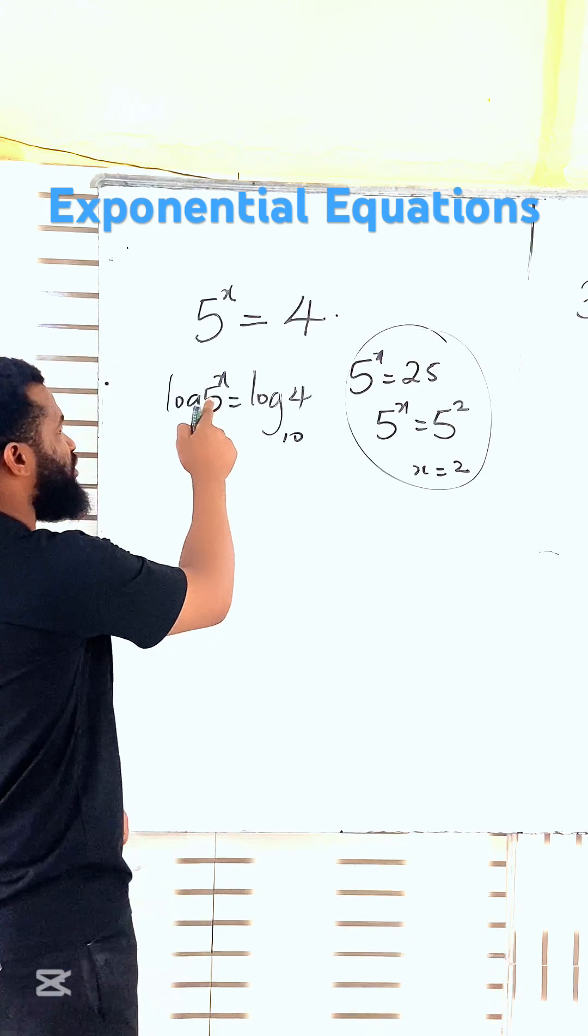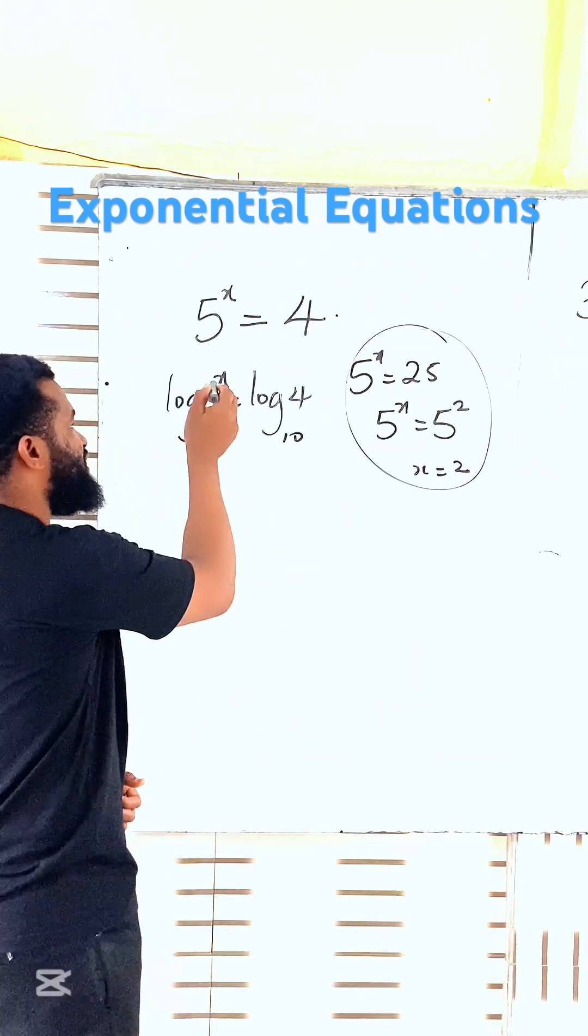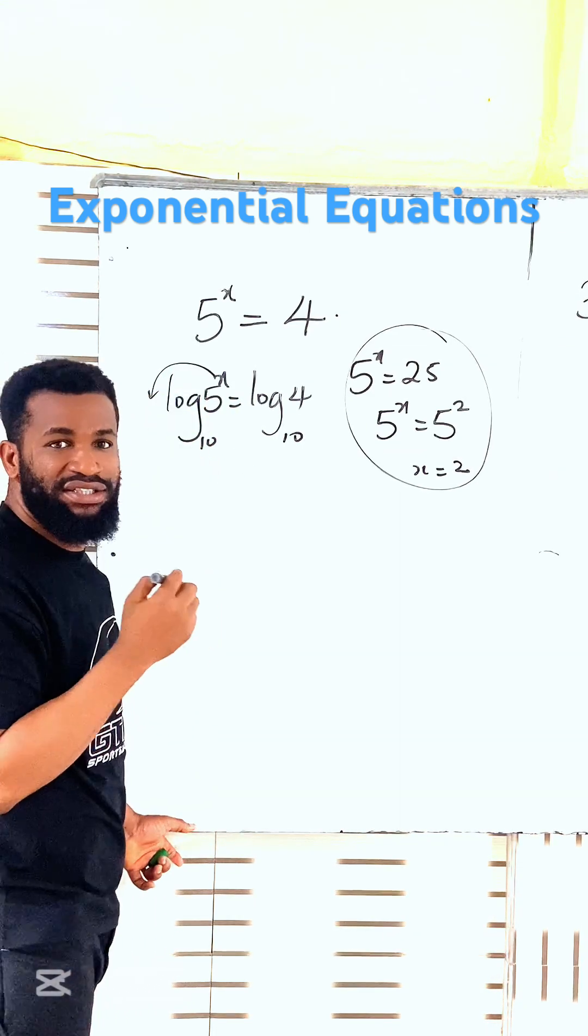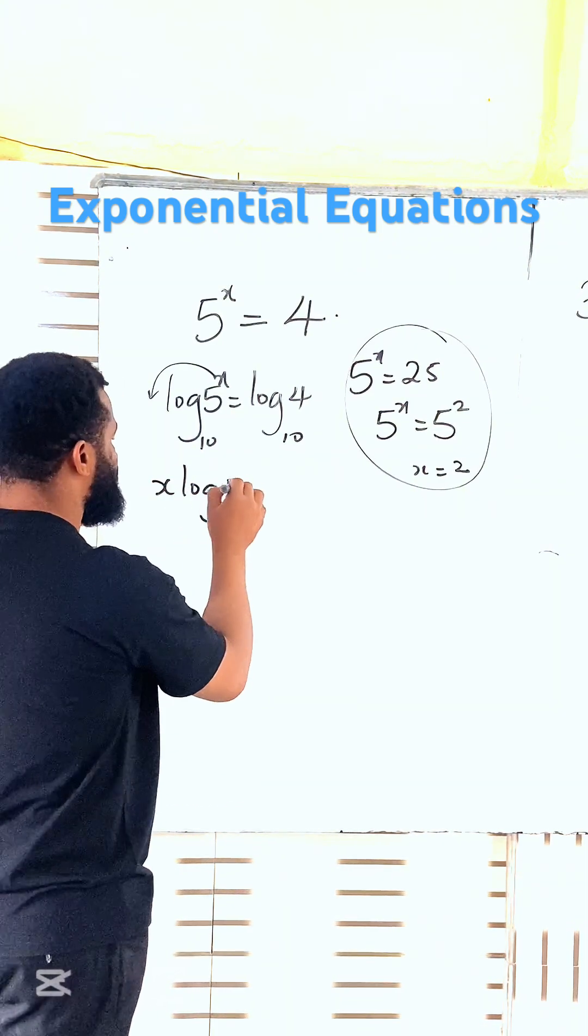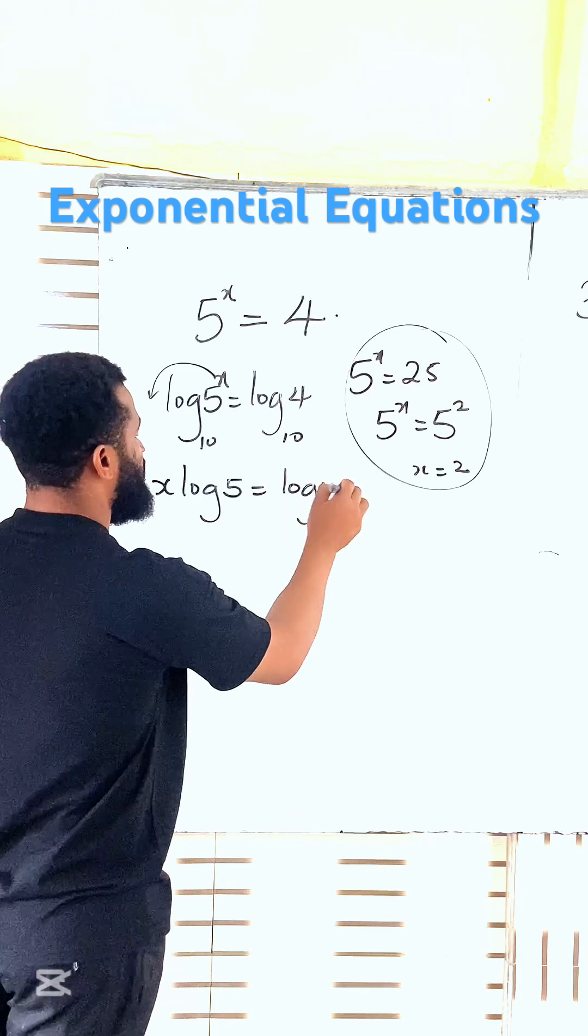So at this point, because of the law of logarithm, this x is coming to multiply the log, which is called power log. So this is going to be x log 5 is equal to log 4.